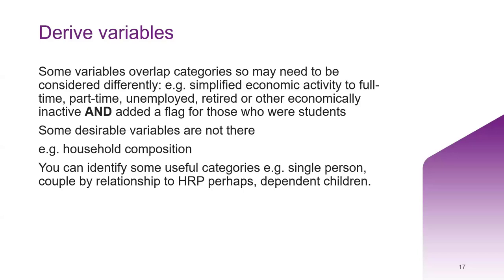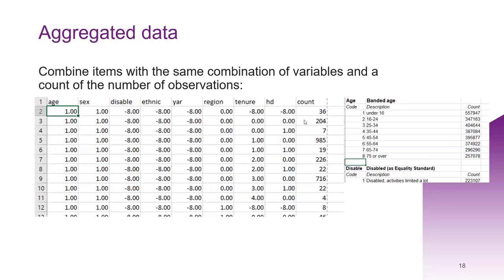In this example, because I want to see students separately, I've put in a flag for those who are students. You'll also find that some things you would like are not there. Household composition — the kind of household people live in — is not in the microdata this time, and it's not possible to derive it fully. You can get some categories, such as single people, dependent children, and pensioners, but not full household composition.